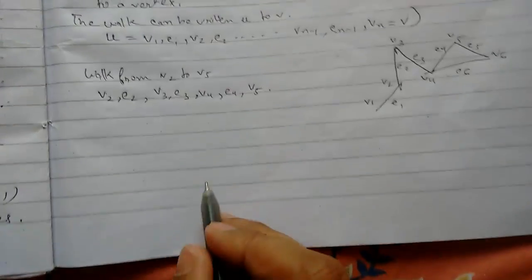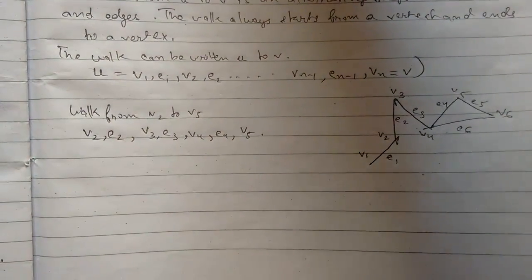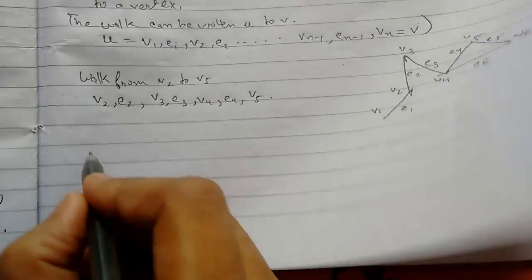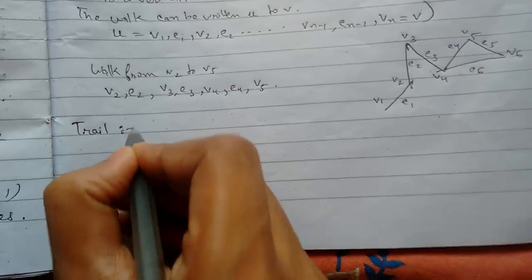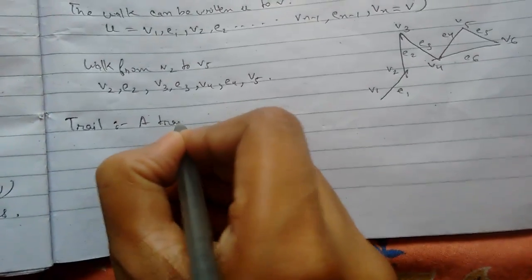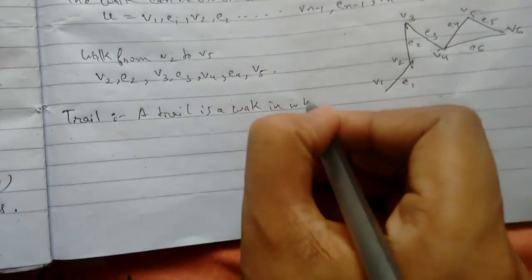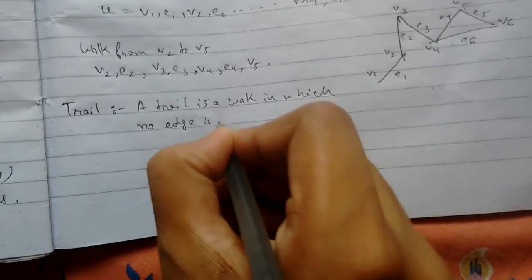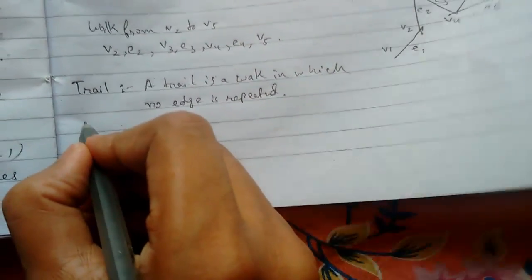So this was an example of a walk. Now let us see what a trail is. A trail is a walk in which no edge is repeated.